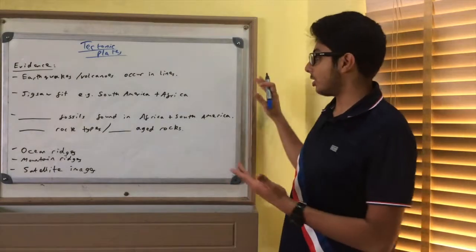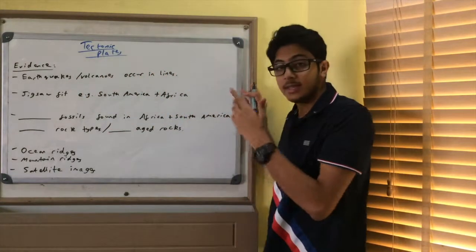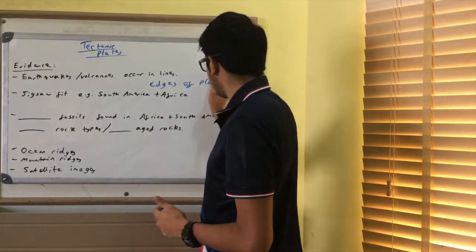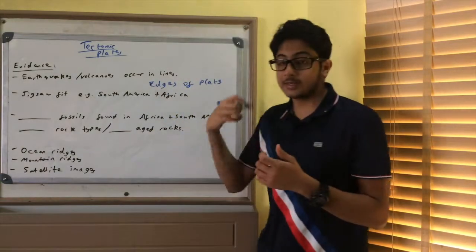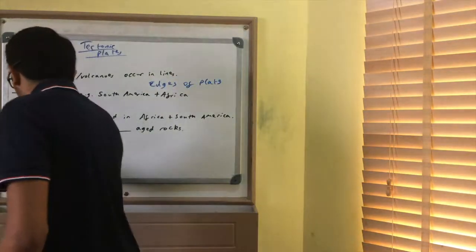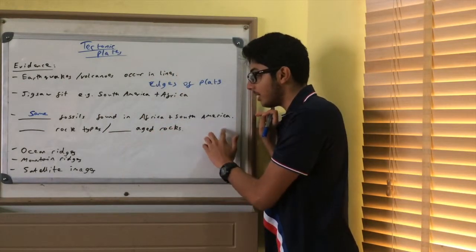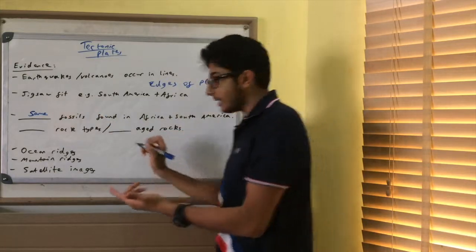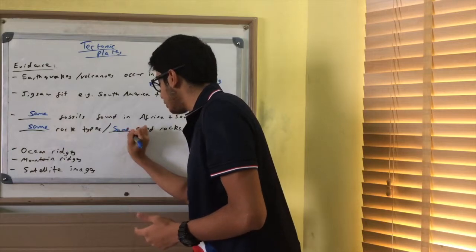Next. So, what is the evidence for tectonic plates? Well, earthquakes and volcanoes occur in lines. And these lines are the edges of plates. And you've also got the jigsaw fit, like South America and Africa seem to fit together. And the same fossils, keyword is same. Same fossils are found in Africa and South America, as well as other places who seem to fit the jigsaw fit. And as well as the same rock types or same aged rocks.